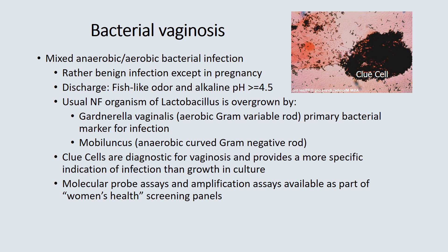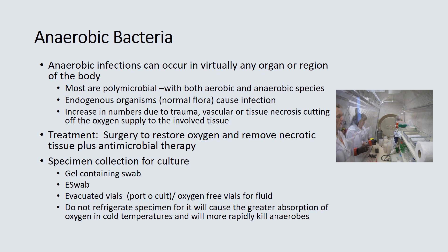Bacterial vaginosis is a mixed anaerobic-aerobic bacterial infection that is benign except in pregnancy, where it can be quite serious. The discharge usually has a fish-like odor with alkaline pH. Normally, Lactobacillus is abundant in the vaginal area, but if destroyed, Gardnerella and Mobiluncus can take over as marker organisms for bacterial vaginosis, particularly Gardnerella vaginalis. Looking for clue cells can be diagnostic, and new molecular probe assays and amplification assays are available as part of women's health screening programs.